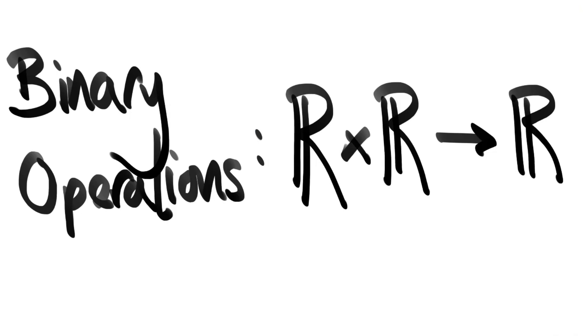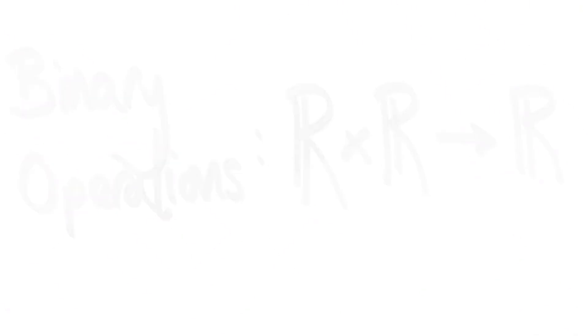In this video I want to answer the question, what is addition? And I don't mean anything fancy by this. I literally mean statements like 2 plus 5 equals 7. What does it mean? Well, that's a stupid question, right? Everyone knows what it means. It means 7 is the number you get when you add 2 and 5 together.